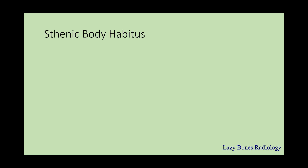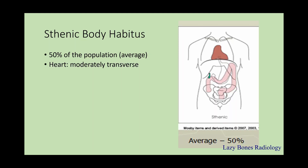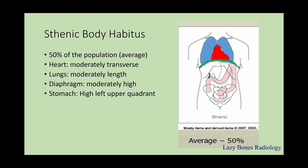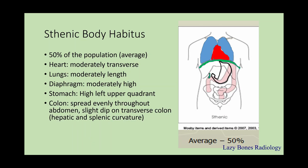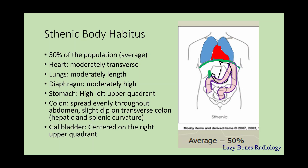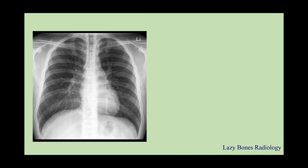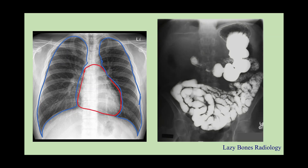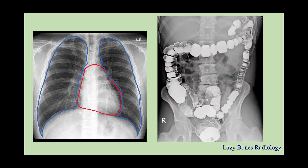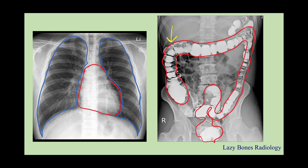Let's begin with the sthenic body habitus. This is roughly 50% of the population, or the average. The heart is moderately transverse, lungs are moderately lengthy, diaphragm is moderately high, stomach is in the high left upper quadrant, and the colon is evenly spread throughout the abdomen with slight dips of the transverse colon known as the hepatic and splenic flexures. The gallbladder is centered in the right upper quadrant.